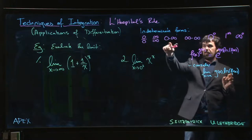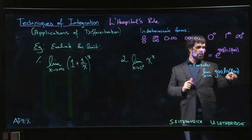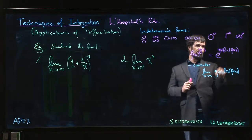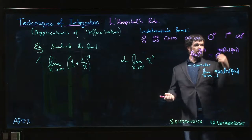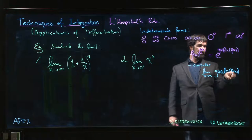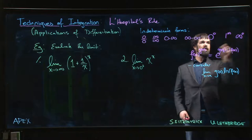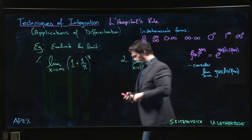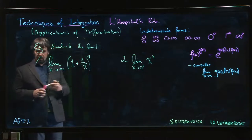So rather than taking the limit of f(x)^g(x), we consider the limit of g(x) times log f(x). If f(x) approaches zero, then log f(x) approaches minus infinity — giving a zero times infinity limit. If f(x) approaches one, log of one is zero, and g(x) approaches infinity — again zero times infinity. If f(x) approaches infinity, log f(x) approaches infinity while g(x) approaches zero — same type. All three forms reduce to this.